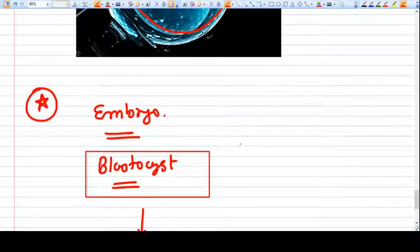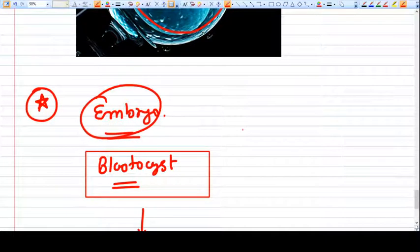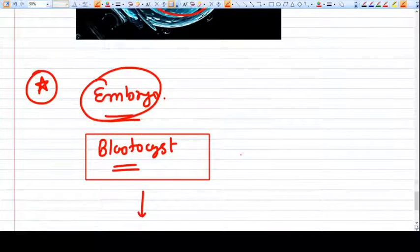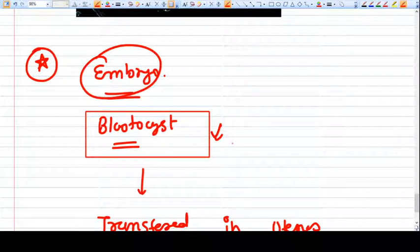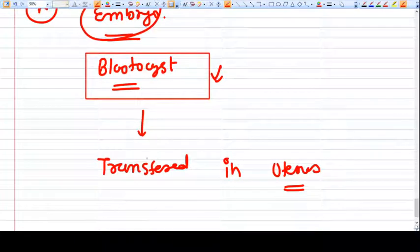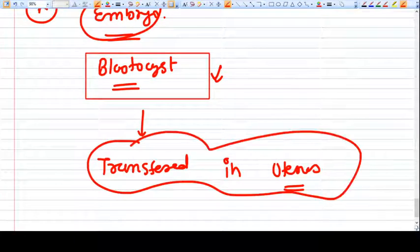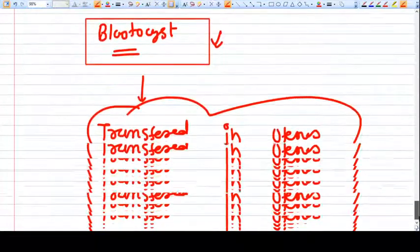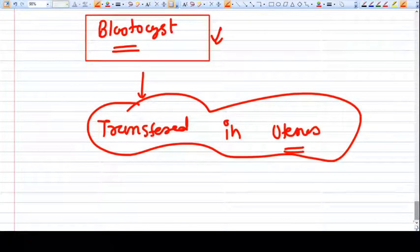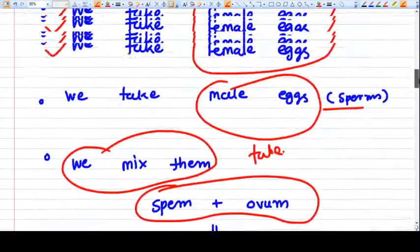What happens after we inject the sperm into the ova? It becomes an embryo at various stages, for example blastocyst stage, and then develops further. We transfer this embryo after checking into the uterus. The embryo will implant on the endometrium, and the person will become pregnant.